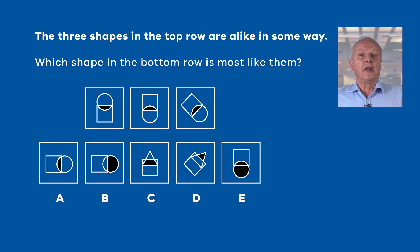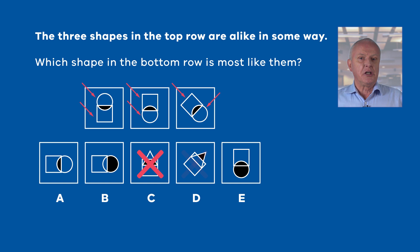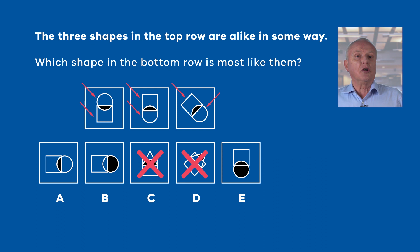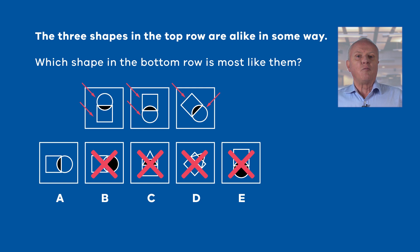First, you should note details about the shapes in each diagram. In each diagram, there are two shapes: a square and a circle. This allows us to eliminate options C and D because they don't have a circle. Both the square and circle are white, but there is a shaded area where they overlap. Option B has a circle that is mostly shaded, and in option E the circle is fully shaded — this does not fit, so these options can be eliminated. Option A has a white circle and a white square with a small shaded area where the shapes overlap, which is consistent with the diagrams in the top row. So the correct answer is A.